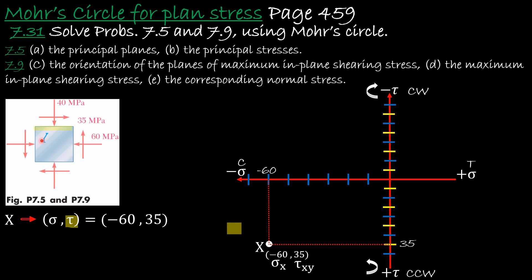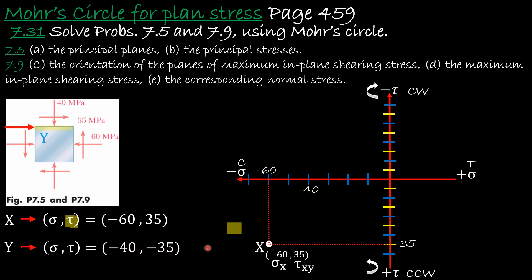Next we look at the y-face. The y-face has two coordinates: normal stress and shear stress. The normal stress is given as 40, and since it is compression, it is negative. The shear stress 35 is negative because if you take that vector and place it at the edge, it causes the element to rotate clockwise. So we plot minus 40 and minus 35, giving us the y-face point.